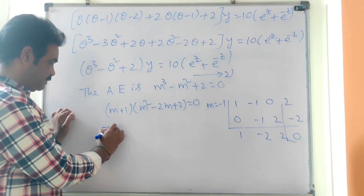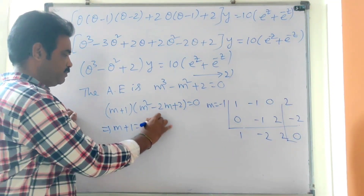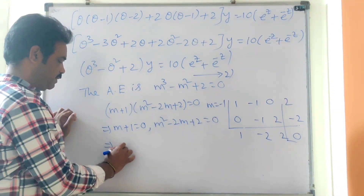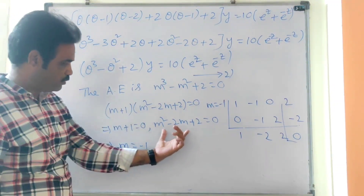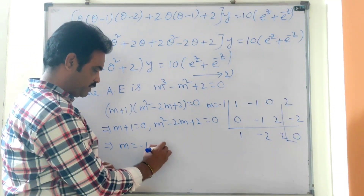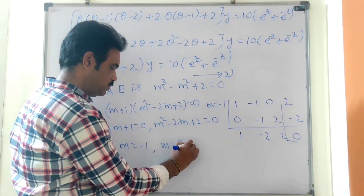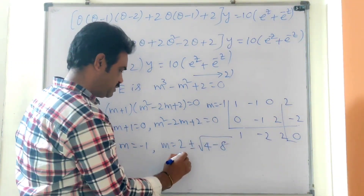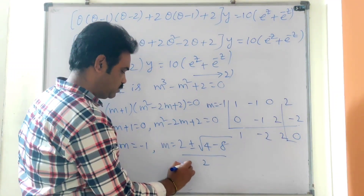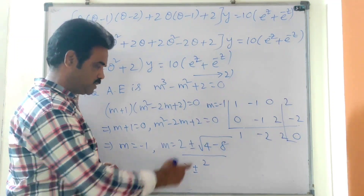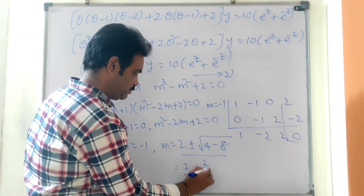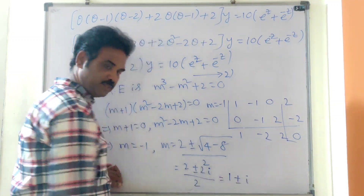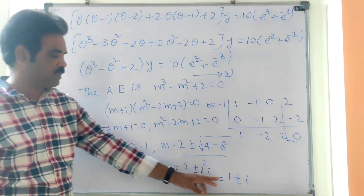So m + 1 = 0 gives m = −1, and m² − 2m + 2 = 0 gives m = [2 ± √(4−8)] / 2 = [2 ± √(−4)] / 2 = [2 ± 2i] / 2 = 1 ± i. Therefore the roots are m = −1 and m = 1 ± i.